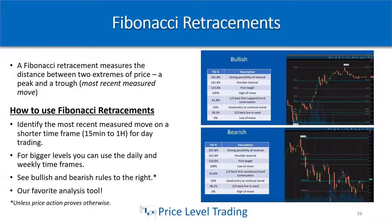The last line in the sand — where price must hold — is the 38.2% Fibonacci, which is two-thirds back. The extensions are really good for identifying potential profit targets: the 123.6% above or below the high and low could be a first target, whether you're short or long, and a potential reversal area. Same with the 161.8% and the 261.8% extensions. The same rules apply to bearish setups — you're essentially flipping the Fibonacci around.